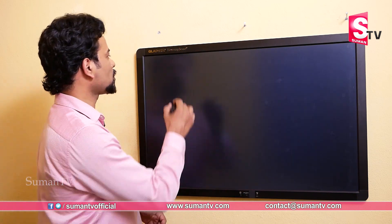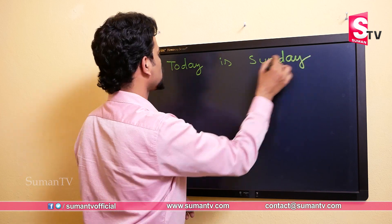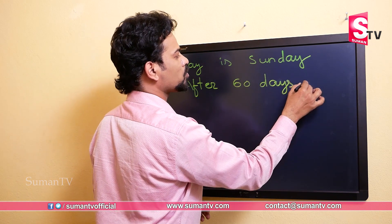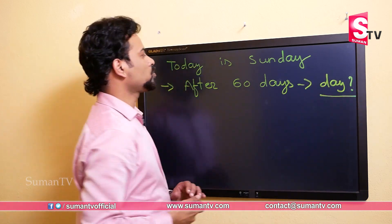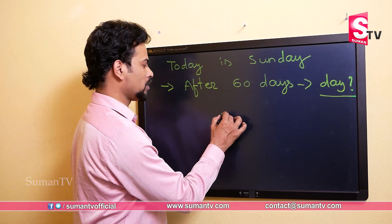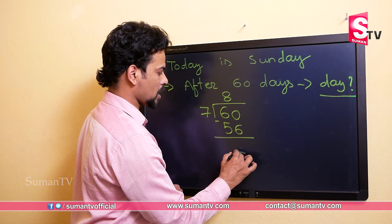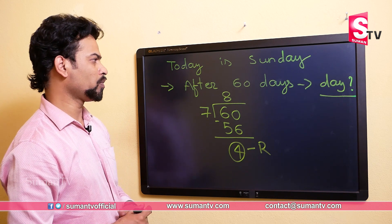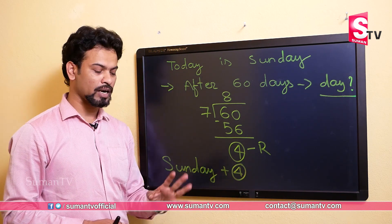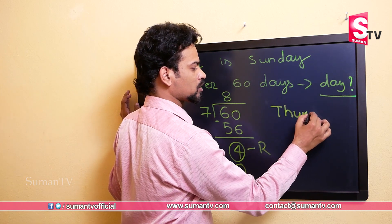Let's do one more example. Suppose today is Sunday and the question is: after 60 days, what will be the day? One week is equal to 7 days, so we divide 60 by 7. 7 eights are 56, we subtract and the remainder is 4. So starting from Sunday we add 4 days: Monday, Tuesday, Wednesday, and Thursday. So after 60 days it will be Thursday.